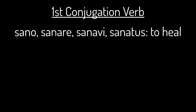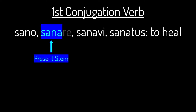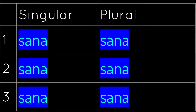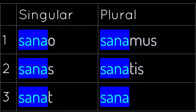Sano, sanare — a first conjugation verb. The present stem is sana. The first step when you conjugate is you write the present stem six times, and then you're going to add the endings: o, s, t, mus, tis, nt.